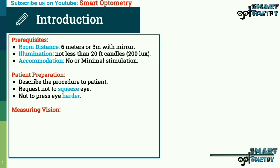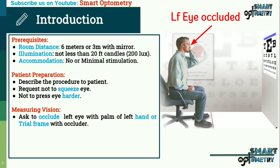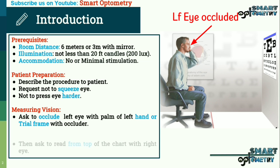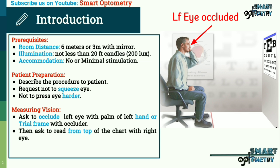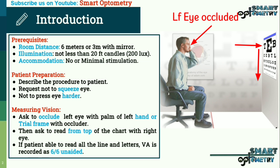Now for the procedure of measuring visual acuity: ask the patient to occlude the left eye with the palm of the left hand or a trial frame with an occluder, then ask them to read from the top of the chart with the right eye. If the patient is able to read all the lines and letters, visual acuity is recorded as 6/6.